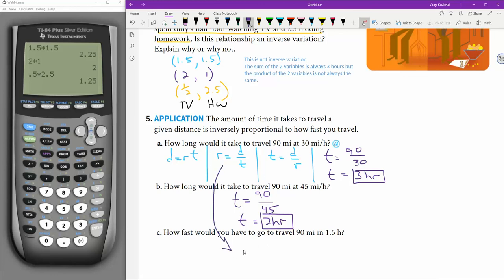And how fast would you have to go to travel 90 miles in 1.5 hours? So now I'm going to use this one. My rate would have to be distance divided by 1.5. And so my rate would have to be 90 divided by 1.5, 60 miles per hour.